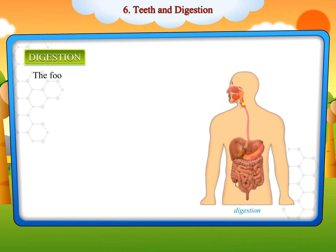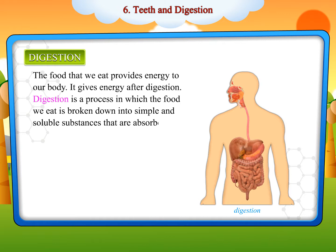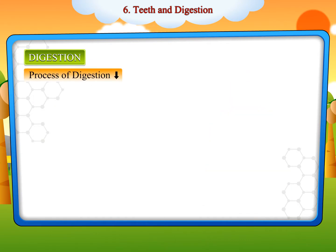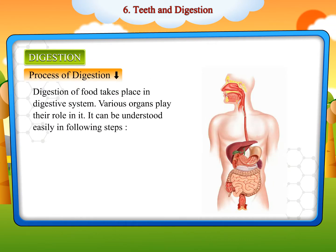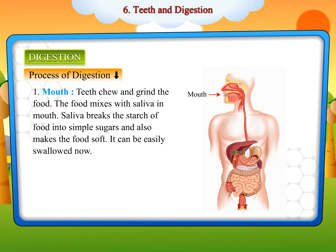The food that we eat provides energy to our body after digestion. Digestion is a process in which the food we eat is broken down into simple and soluble substances that are absorbed by the body. Digestion of food takes place in the digestive system, where various organs play their role. In the mouth, teeth chew and grind the food. The food mixes with saliva, which breaks down starch into simple sugars and makes the food soft so it can be easily swallowed.